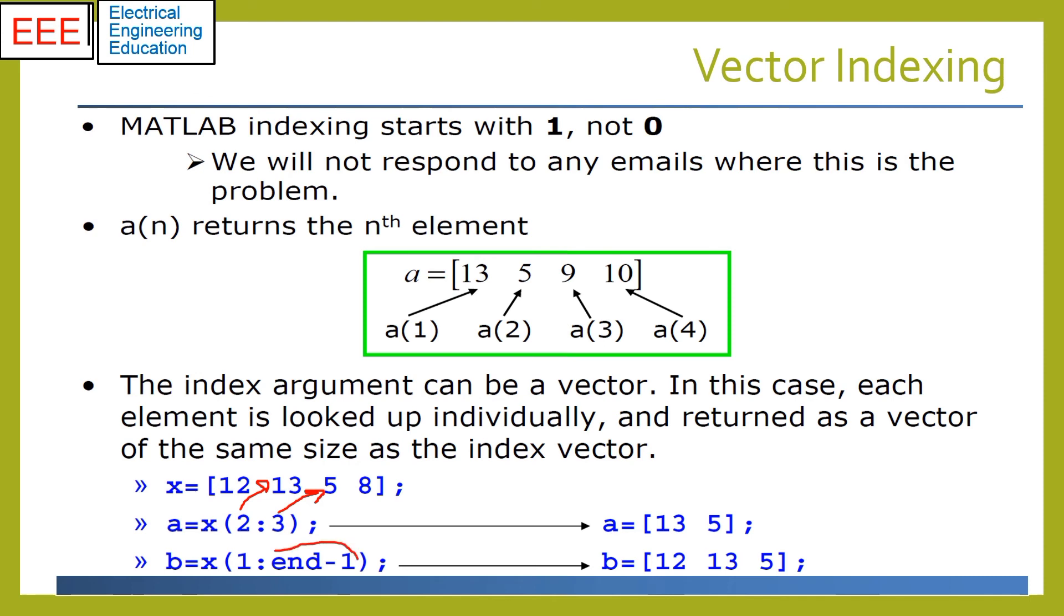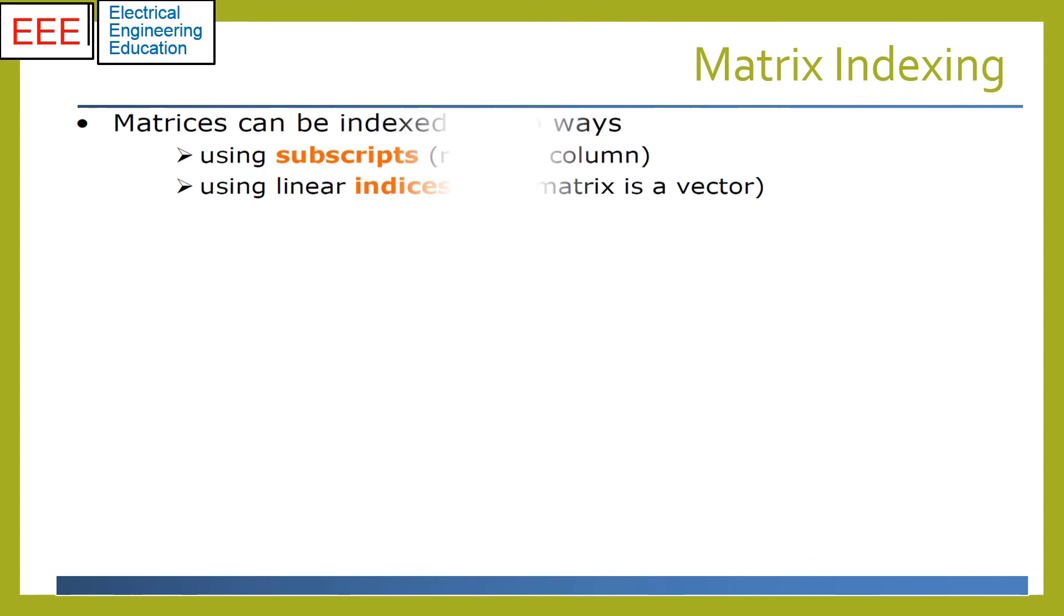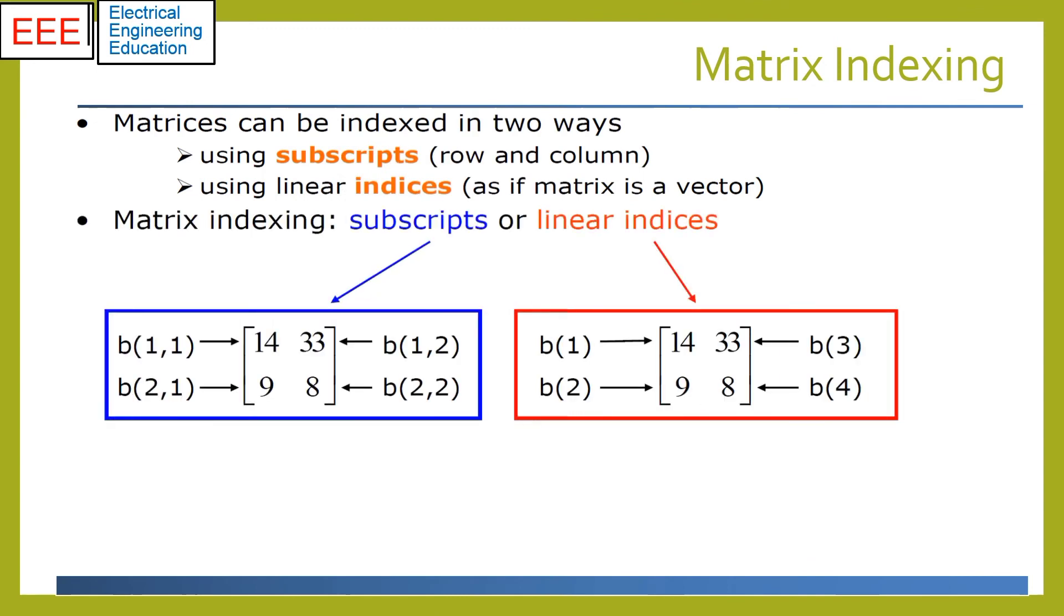To access the elements of a matrix, there are two ways. The most common is to specify row and column or subscripts, and the second is linear indexing which uses a single subscript that traverses down each column in order.